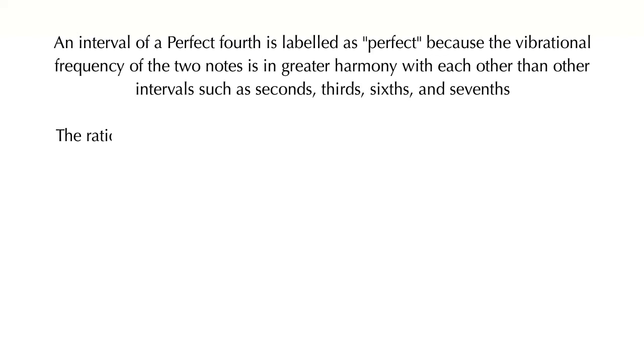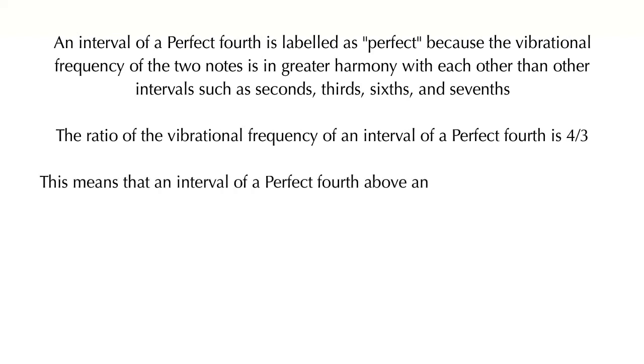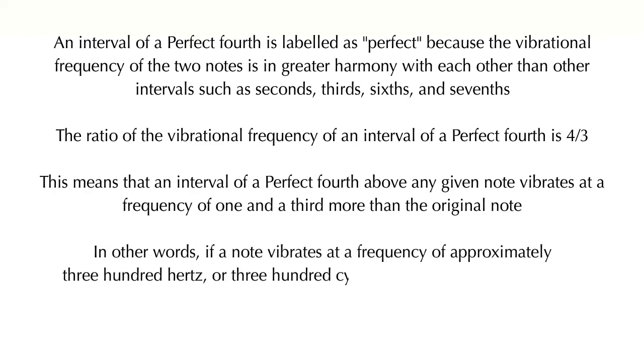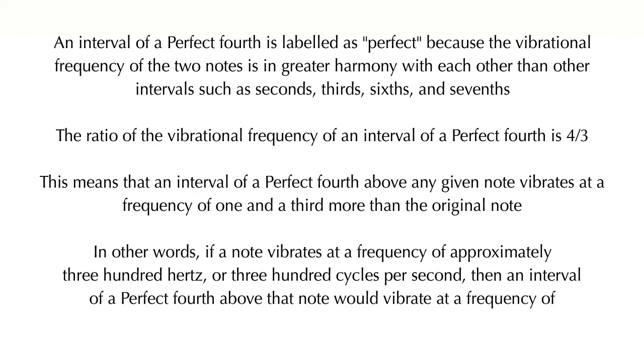For example, the ratio of the vibrational frequency of an interval of a perfect fourth is 4 to 3. This means that an interval of a perfect fourth above any given note vibrates at a frequency of one and a third more than the original note. In other words, if a note vibrates at a frequency of approximately 300 hertz, or 300 cycles per second, then an interval of a perfect fourth above that note would vibrate at a frequency of approximately 400 cycles per second.